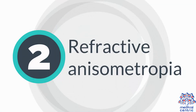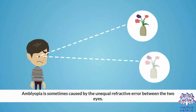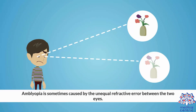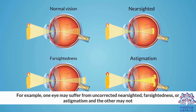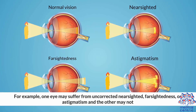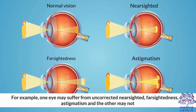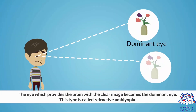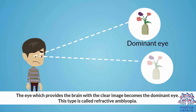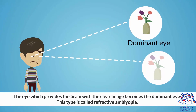Refractive anisometropia: Amblyopia is sometimes caused by unequal refractive error between the two eyes. For example, one eye may suffer from uncorrected nearsightedness, farsightedness, or astigmatism, and the other may not. In such cases, the brain relies on the eye with less uncorrected refractive error and ignores the blurred vision from the other eye. The eye which provides the brain with the clear image becomes the dominant eye. This type is called refractive amblyopia.